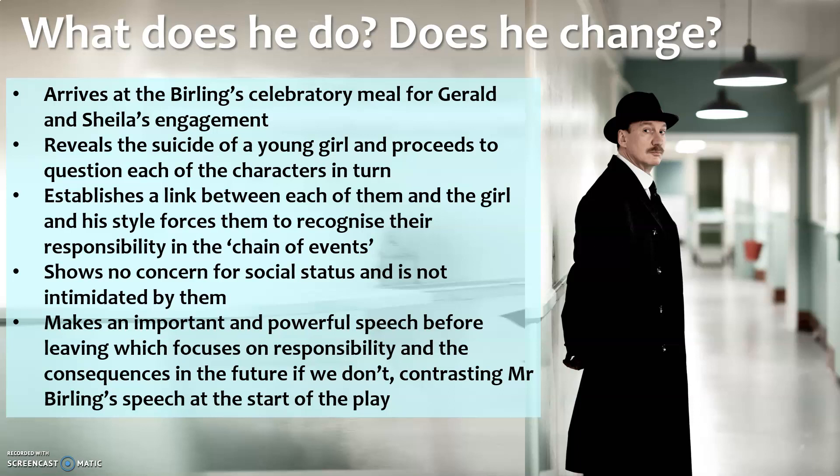So what does the inspector do in the play? He arrives at the celebratory meal, reveals there's been a suicide of a young girl, then goes around questioning each of the characters in turn. Each one has a link to the girl, and he establishes that, making them recognise their own responsibility. Things are revealed bit by bit gradually, and structurally that's interesting because Priestley is building tension and keeping us as an audience guessing about what the link will be.